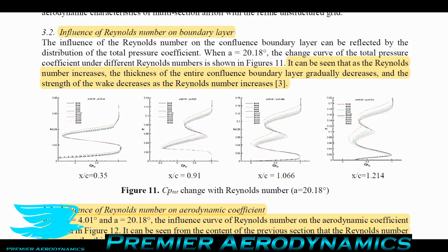The wake also decreases as Reynolds number increases, for two reasons. First, at higher Reynolds number the boundary layer has more momentum, allowing it to resist the adverse pressure gradient longer and produce a smaller wake. Second, the reduced boundary layer thickness itself reduces the wake — even on a highly streamlined object like a symmetric airfoil at zero degrees angle of attack, the boundary layer's presence still creates a wake. So reducing boundary layer thickness reduces the wake, and the increased momentum keeps flow attached longer, reducing the wake further.